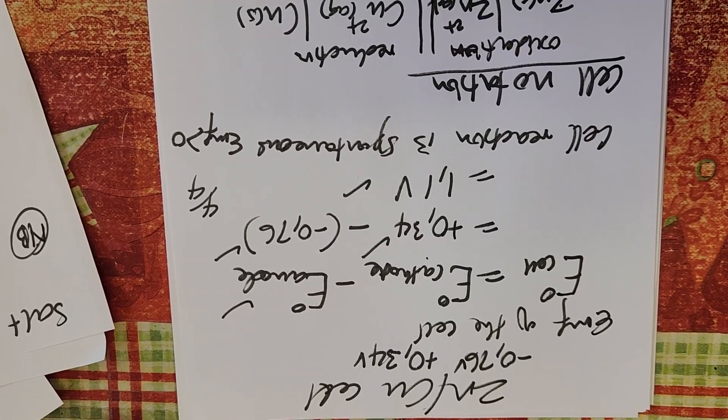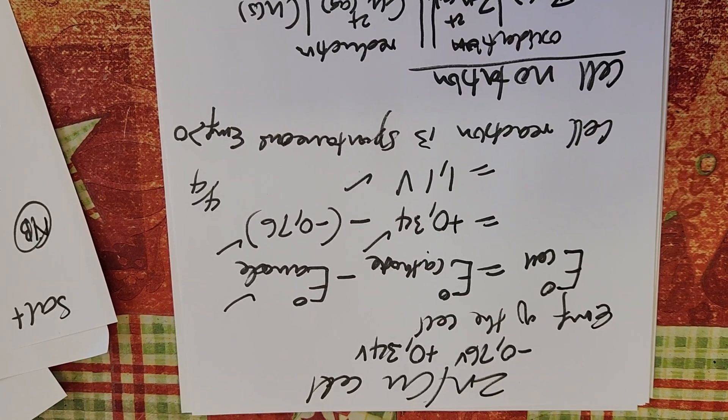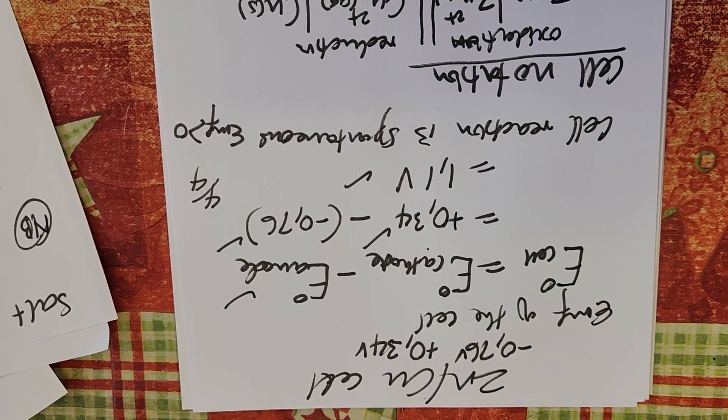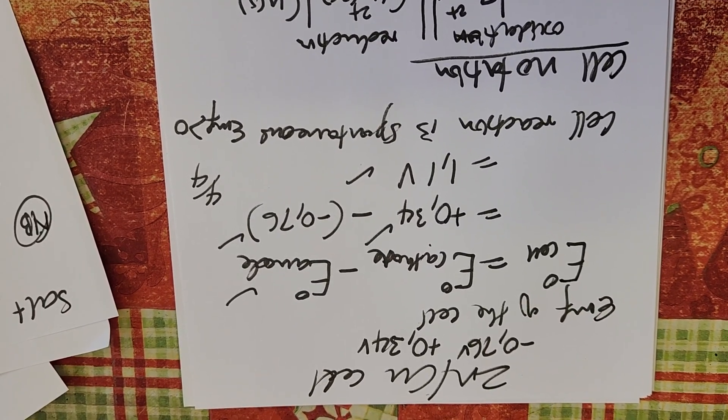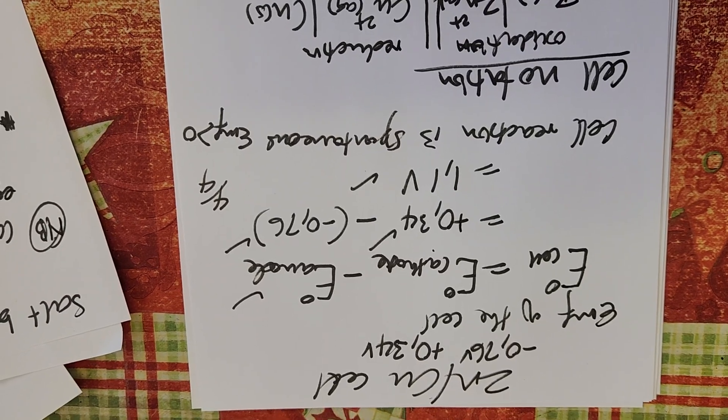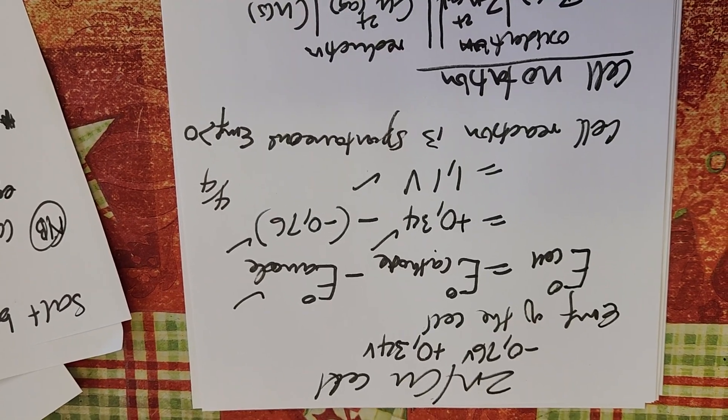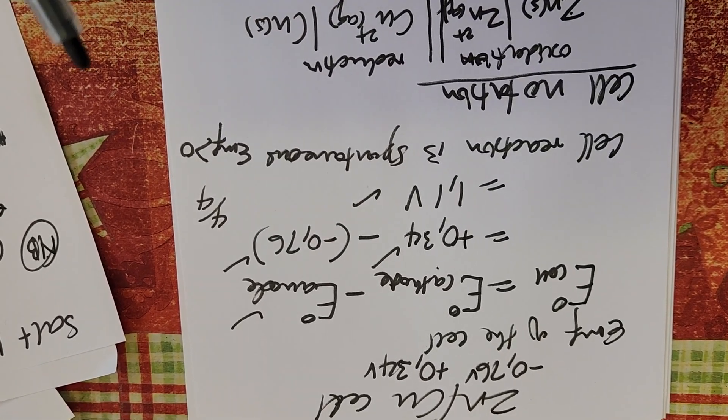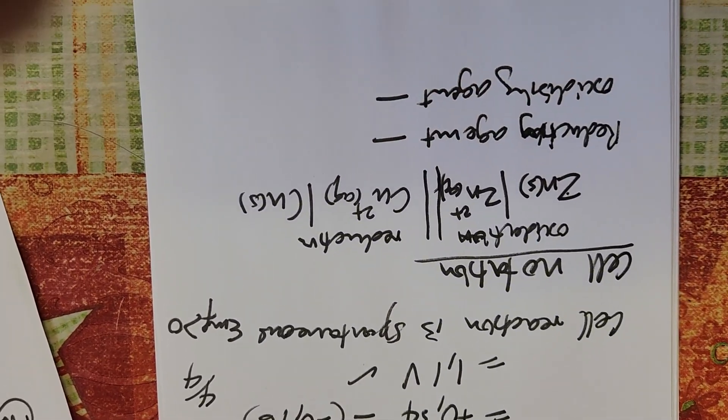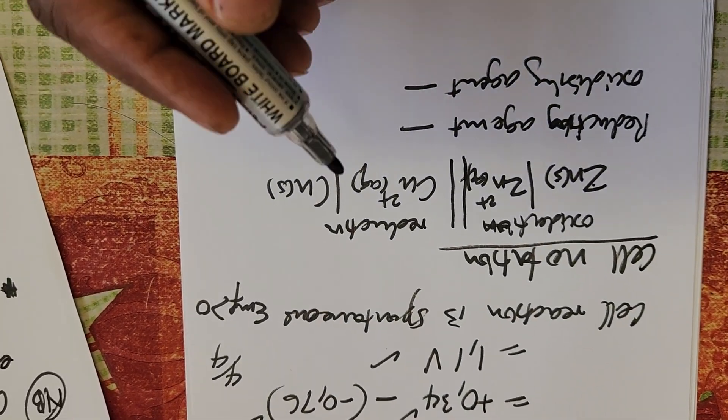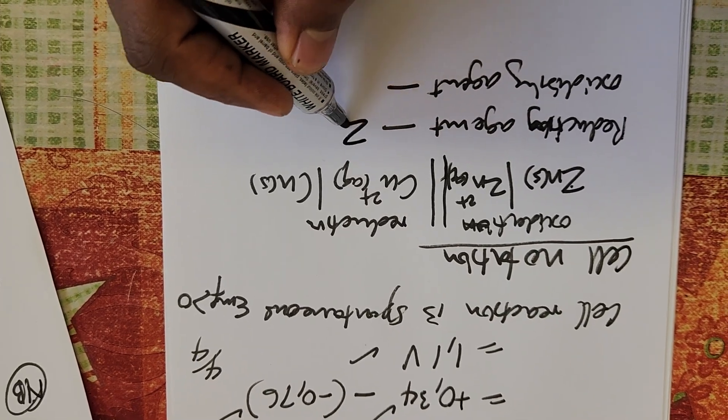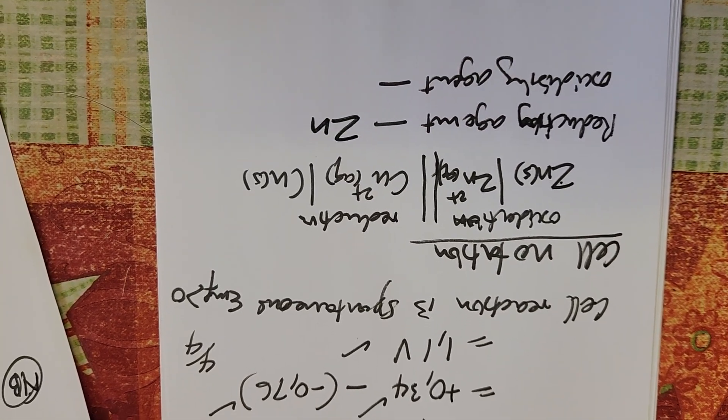The reducing agent obviously will be the one that is oxidized, or the one that undergoes oxidation in this case, which will be zinc oxidized to form zinc ion.